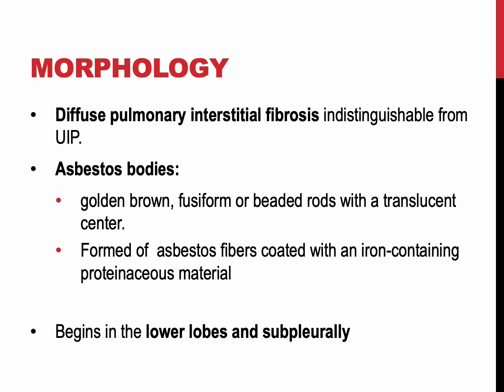Asbestos bodies consist of asbestos fibers coated with an iron-containing proteinaceous material. They are formed when macrophages try to phagocytose asbestos fibers. The iron coat or outer crust is derived from the phagocyte ferritin.